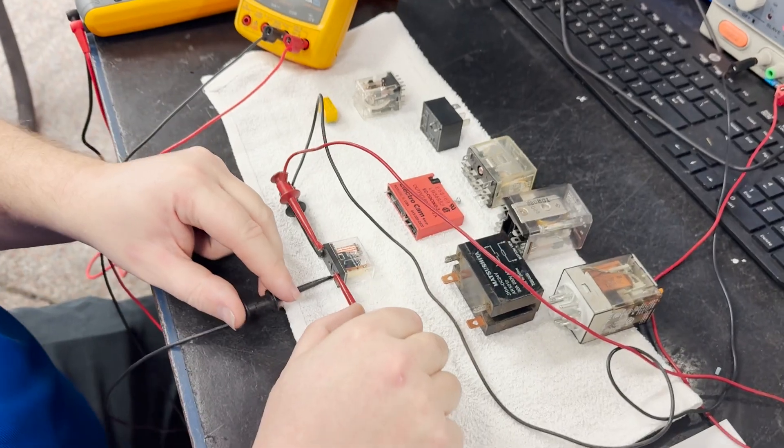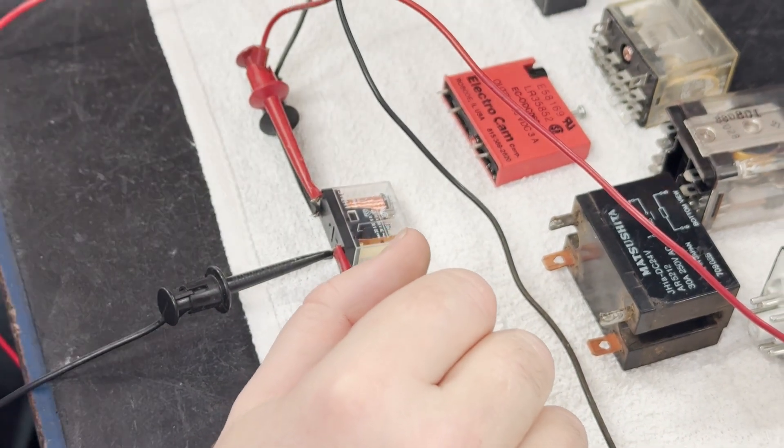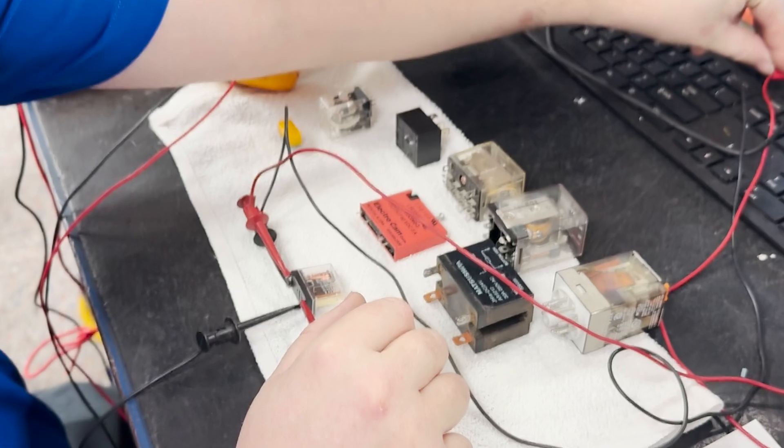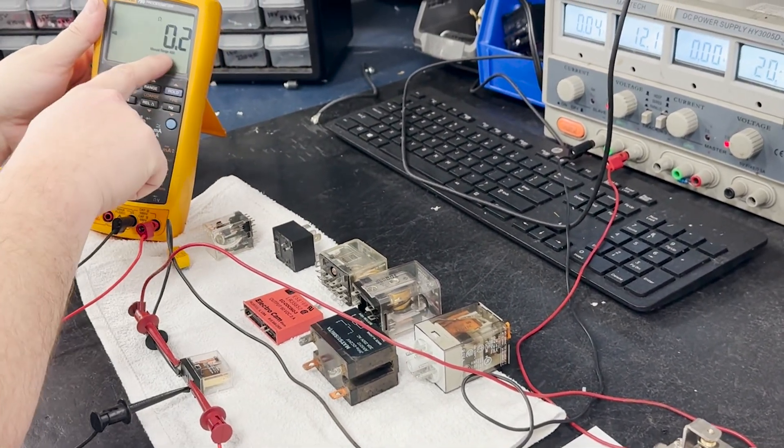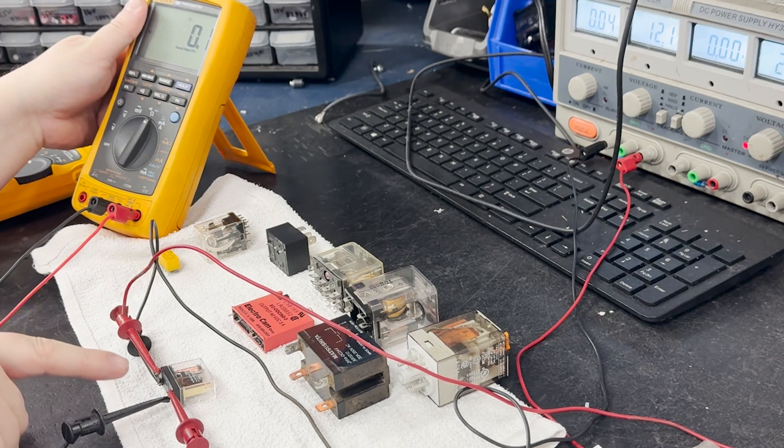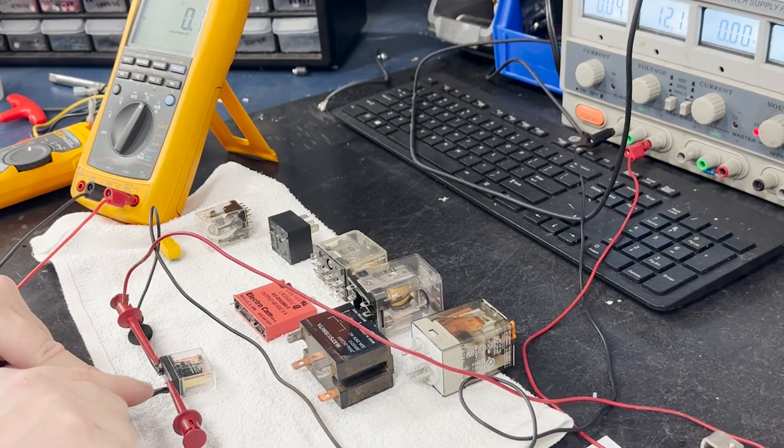This is a non-polarized relay, meaning it does not matter where I put my positive and negative current. If we add an input of 12 volts and refer to our meter, we have visual confirmation of a short, which means no current is able to pass through these two points.